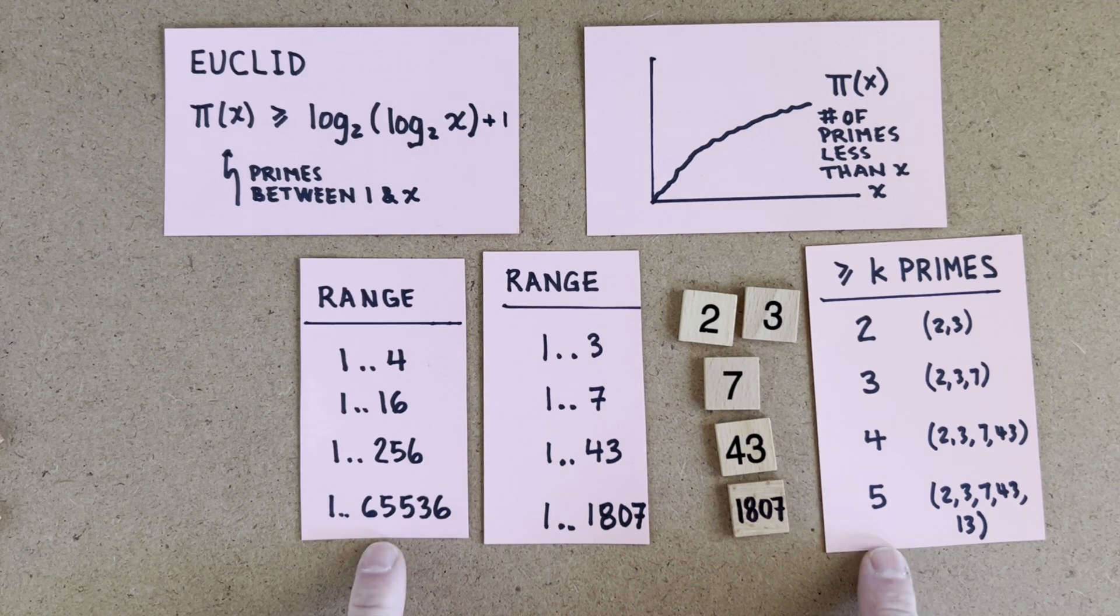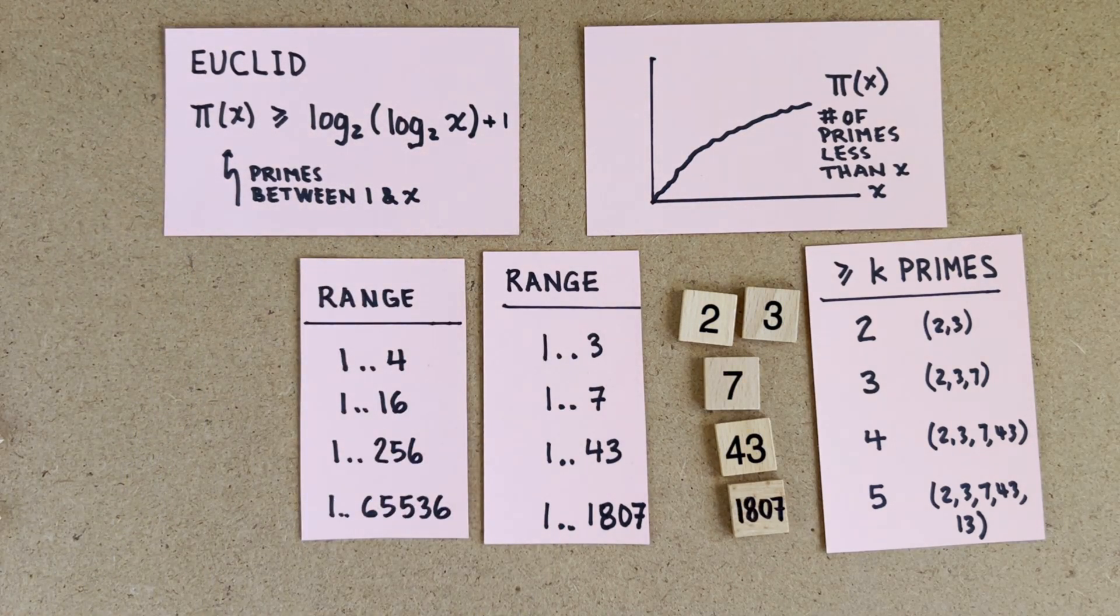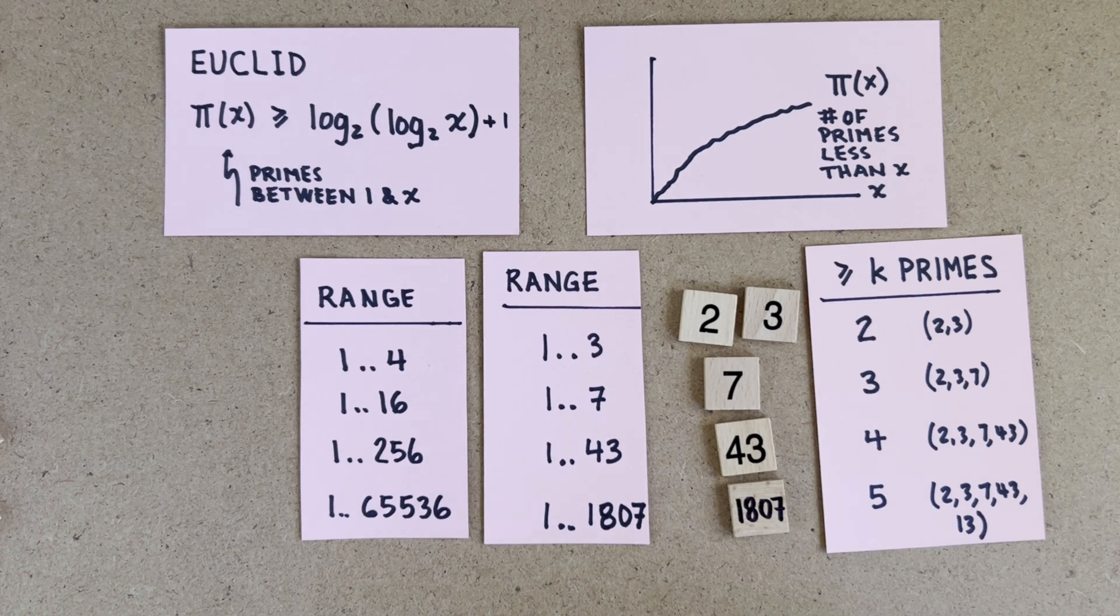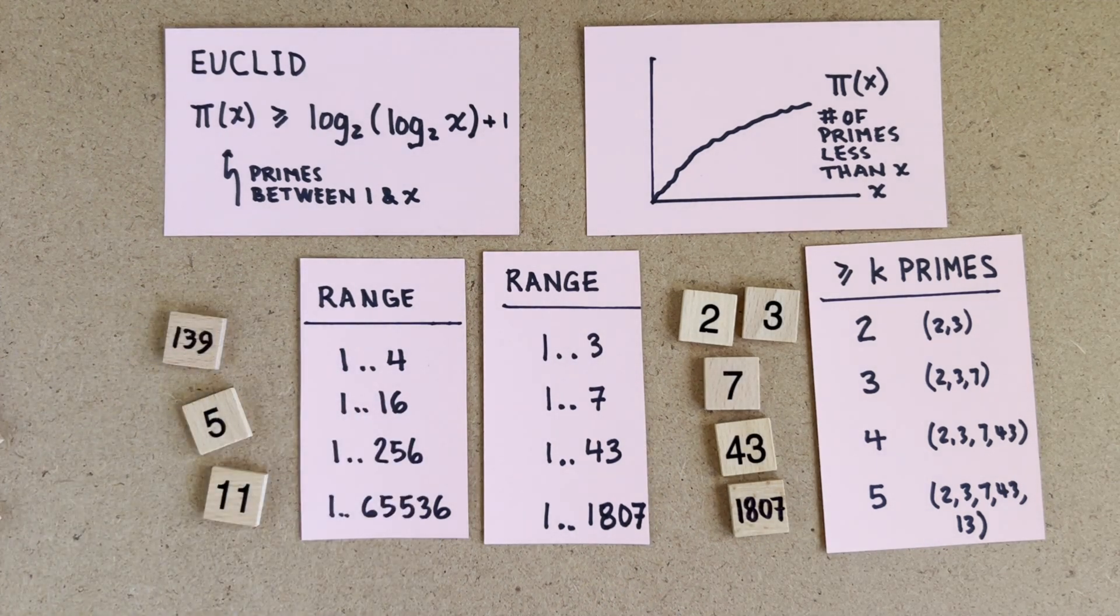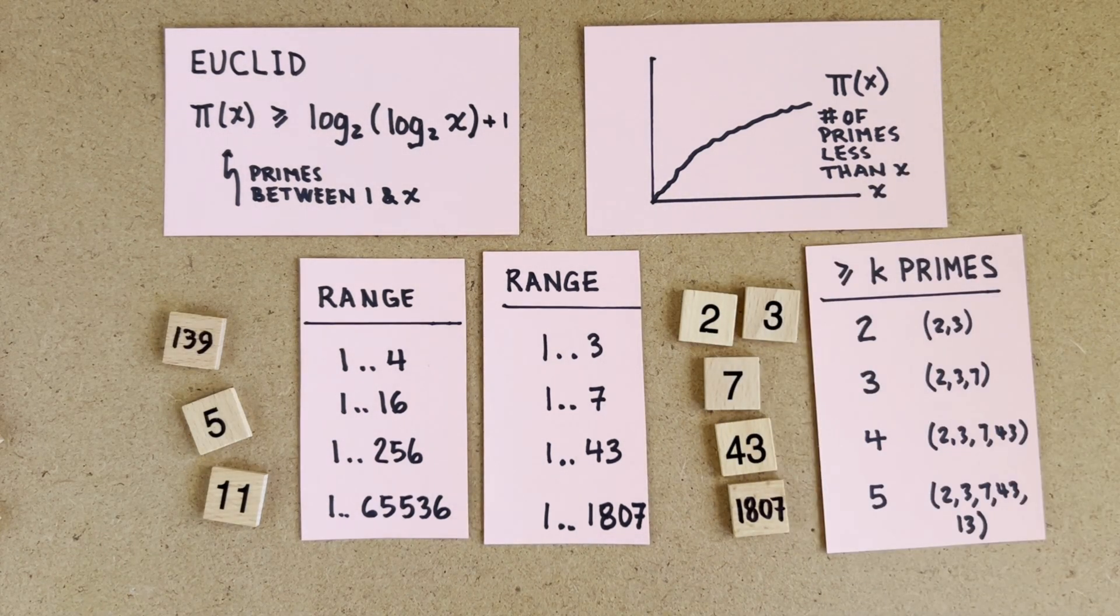And now we're in good shape, because between 1 and x there are at least k primes, where k is the log of the log of x plus 1. Now that's super conservative, there are surely a lot more primes than that. But no matter what monstrously large x you give me, I can tell you with absolute certainty there are at least log log x primes less than x.